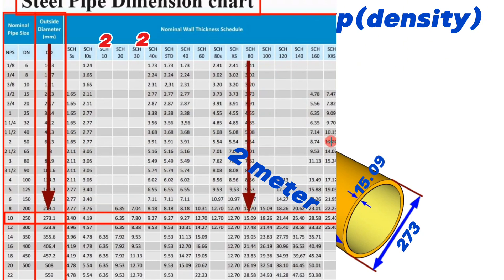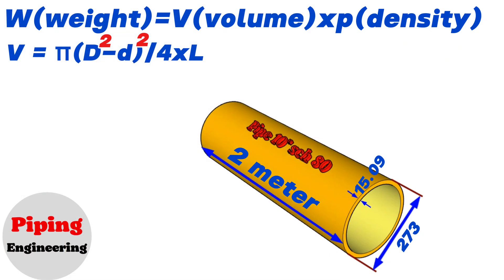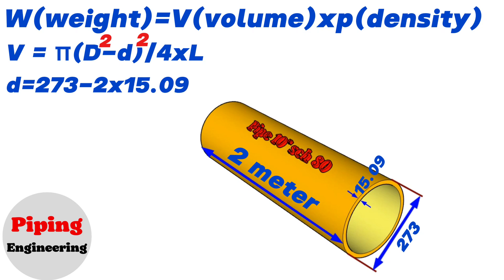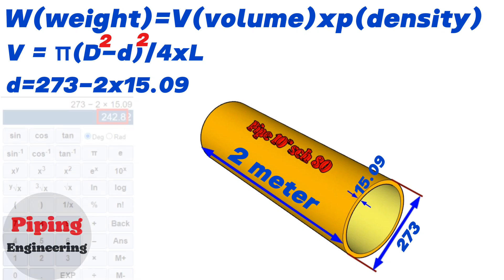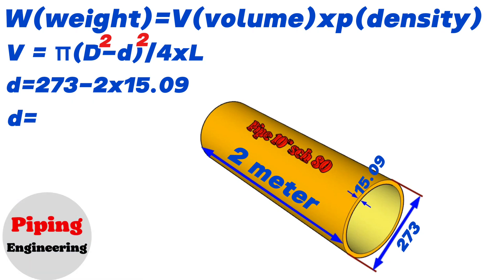Now we can calculate the inside diameter of this 10 inch pipe. The inside diameter equals the outside diameter 273 minus 2 times the wall thickness 15.09. Using the calculator, we find that 273 minus 2 times 15.09 equals approximately 243. So we calculated and found that the inside diameter of the 10 inch schedule 80 pipe is 243 millimeters.